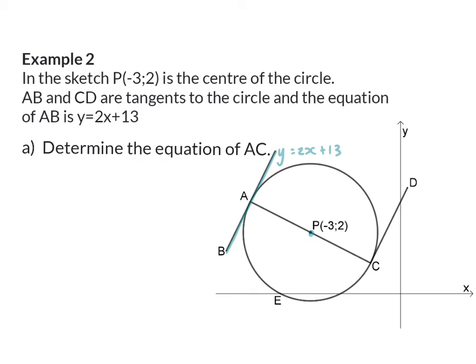Question a: Determine the equation of AC. Line AC is the diameter of the circle. And according to our theorem this will then be perpendicular to the tangent AB.